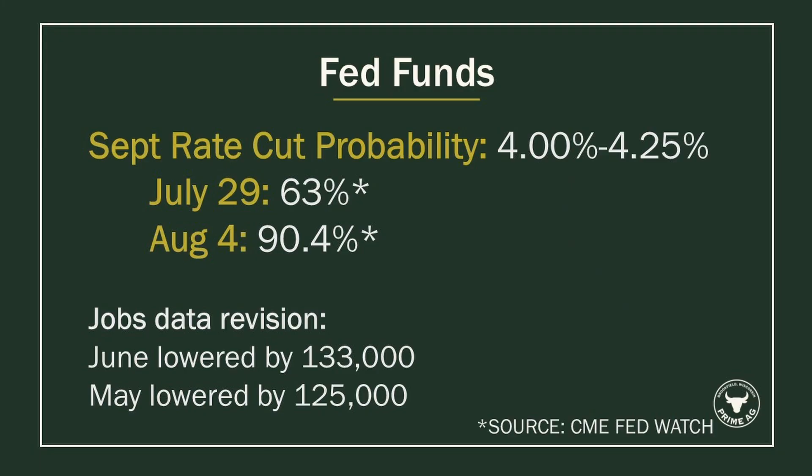After that FOMC meeting, about two days later we had payrolls numbers come in. July 30th was the most recent FOMC meeting and the next meeting would occur in September. Prior to that payrolls report, the CME FedWatch tool had a 63 percent probability of a rate cut at the September meeting, which would drop rates to about four to four and a quarter percent. After the payrolls number came in, that probability jumped to 90 percent, due to the heavy revisions we saw on the payrolls data.